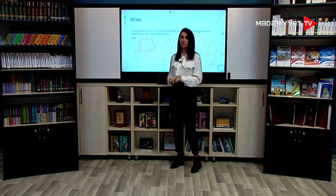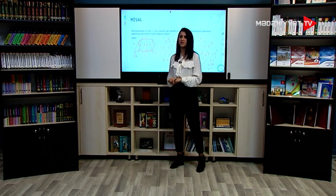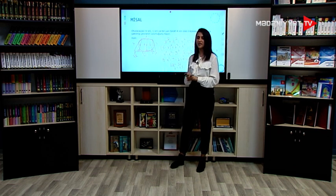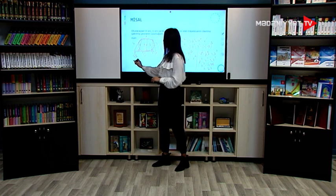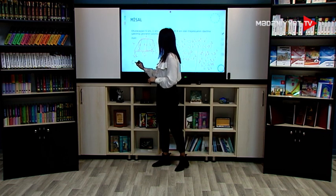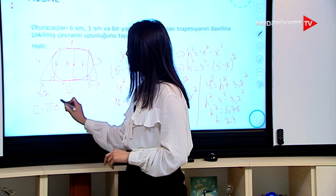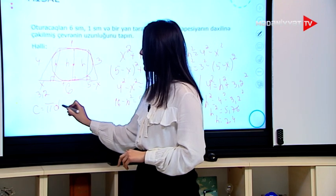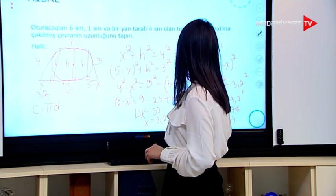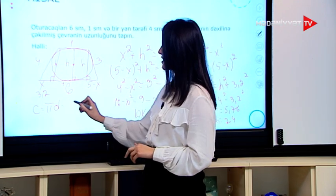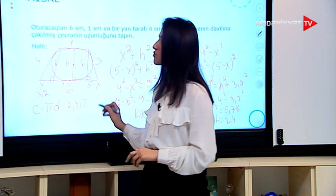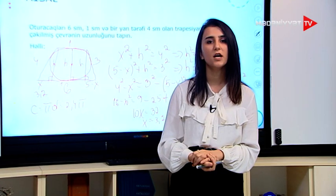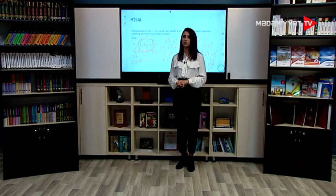Bayaq qeyd eləmişdik ki, bu h bizim çevrəmizin diametridir. Deməli, çevrənin uzunluq düsturunu qeyd eləyirik: C = π × d = π × 2,4. Bizim çevrəmizin uzunluğu olacaq 2,4π.